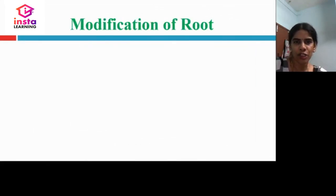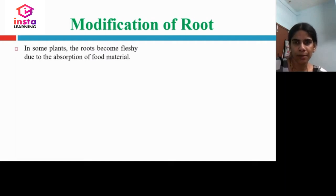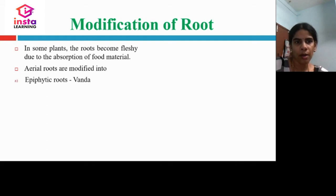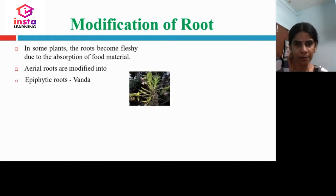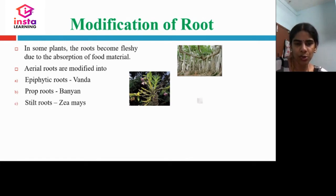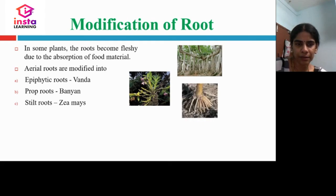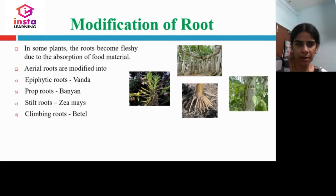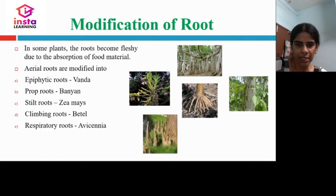Let us learn about modification of roots. In some plants, the roots become fleshy due to the absorption of food materials. Aerial roots are found above the ground, or modified into epiphytic roots in Vanda, which means they grow on other plants. Prop roots can be seen in the banyan tree. Stilt roots can be seen in maize. Climbing roots in betel, respiratory roots in Avicennia, and sucking roots in Cuscuta.